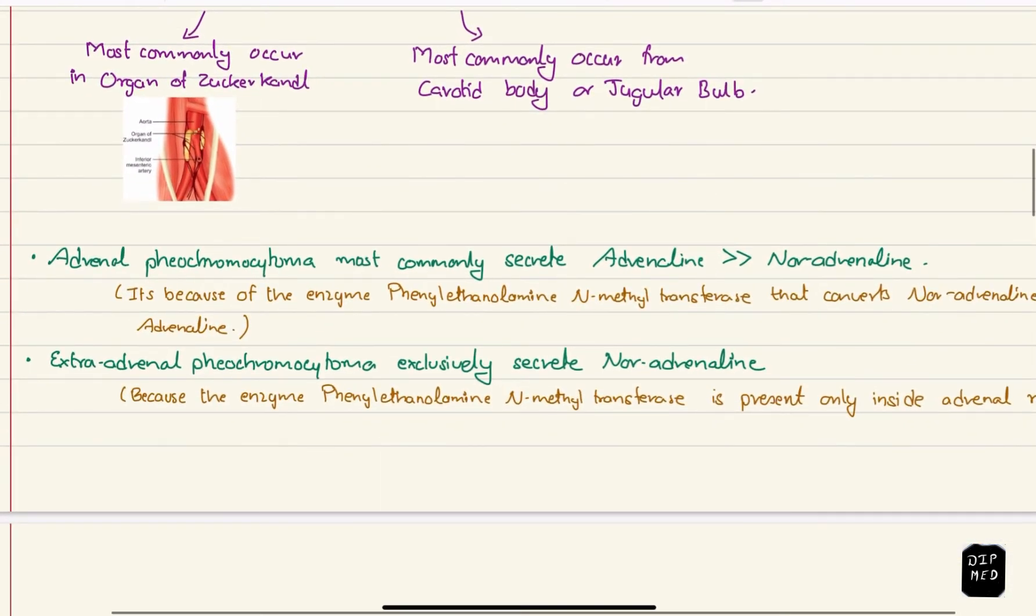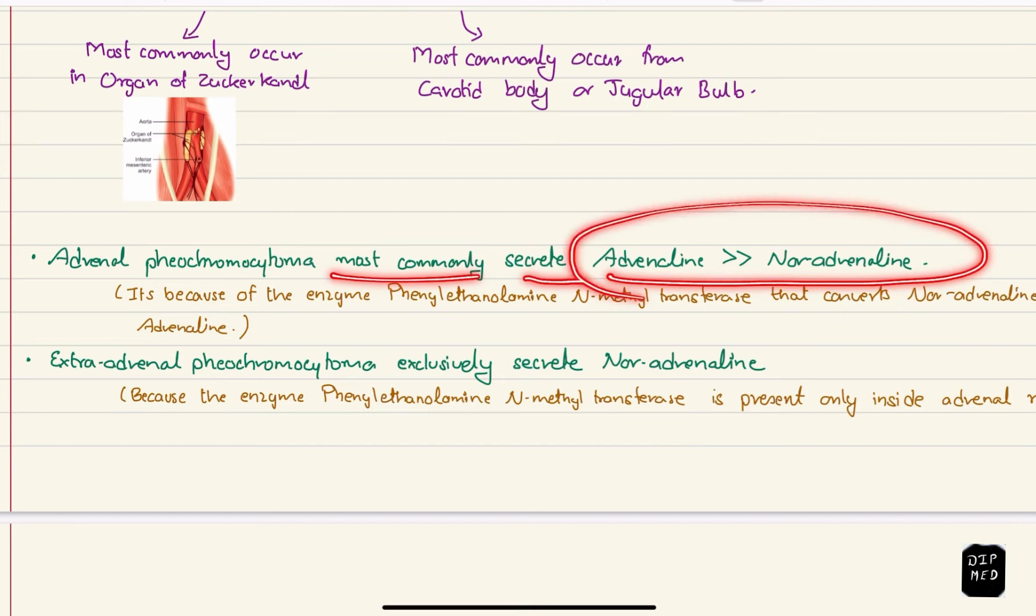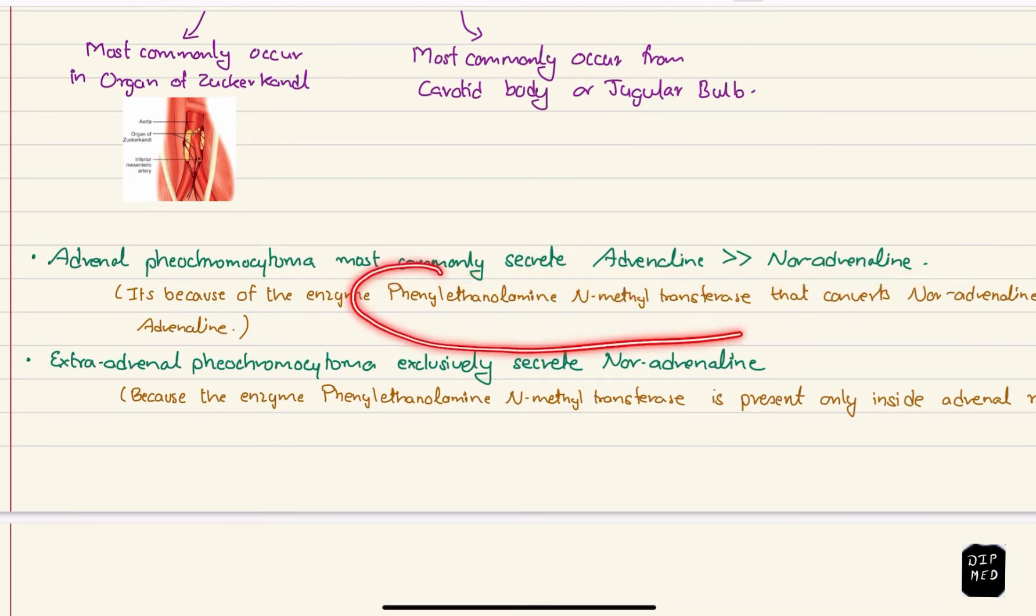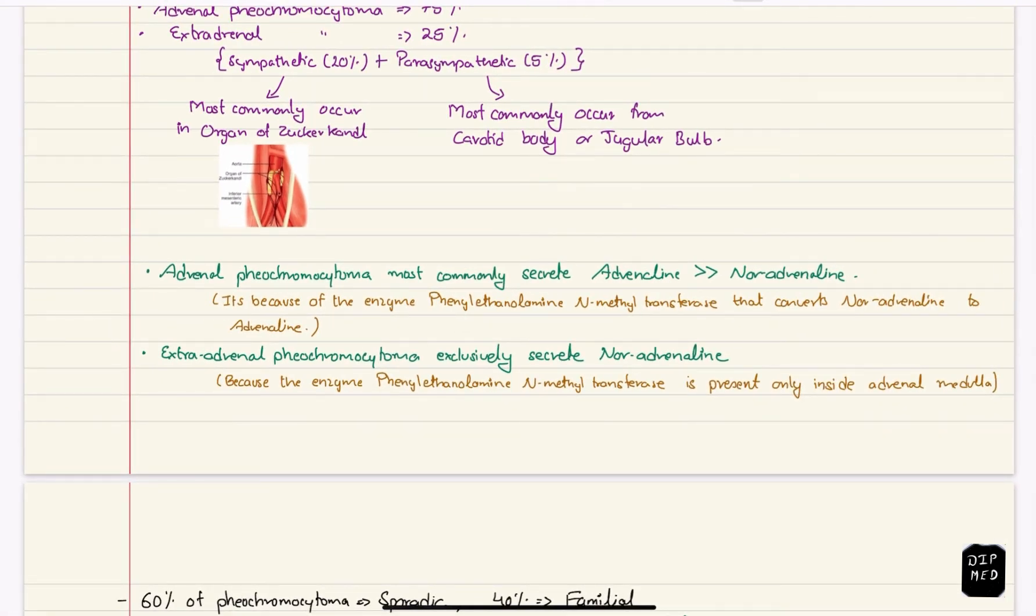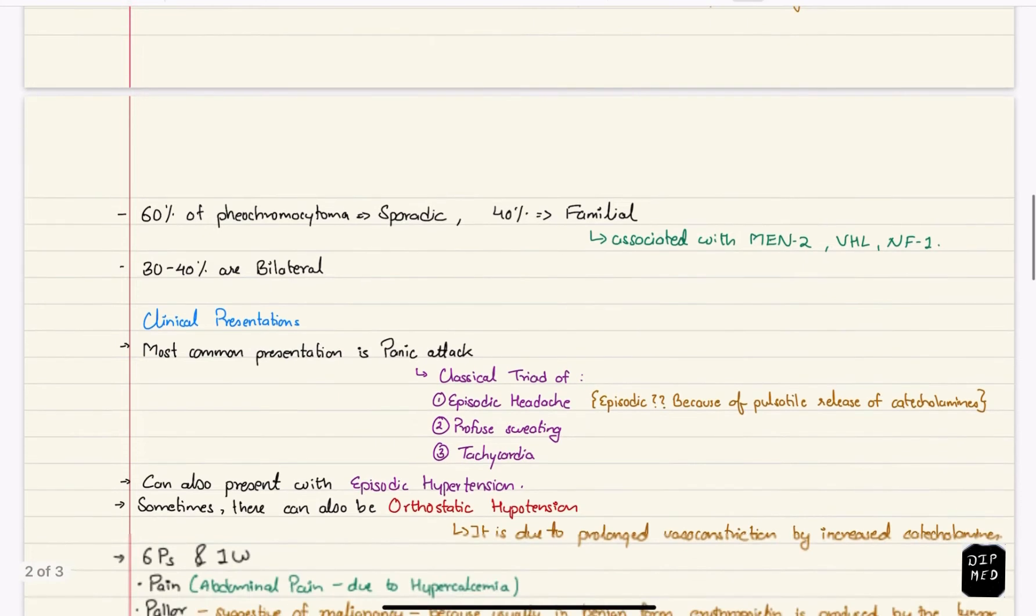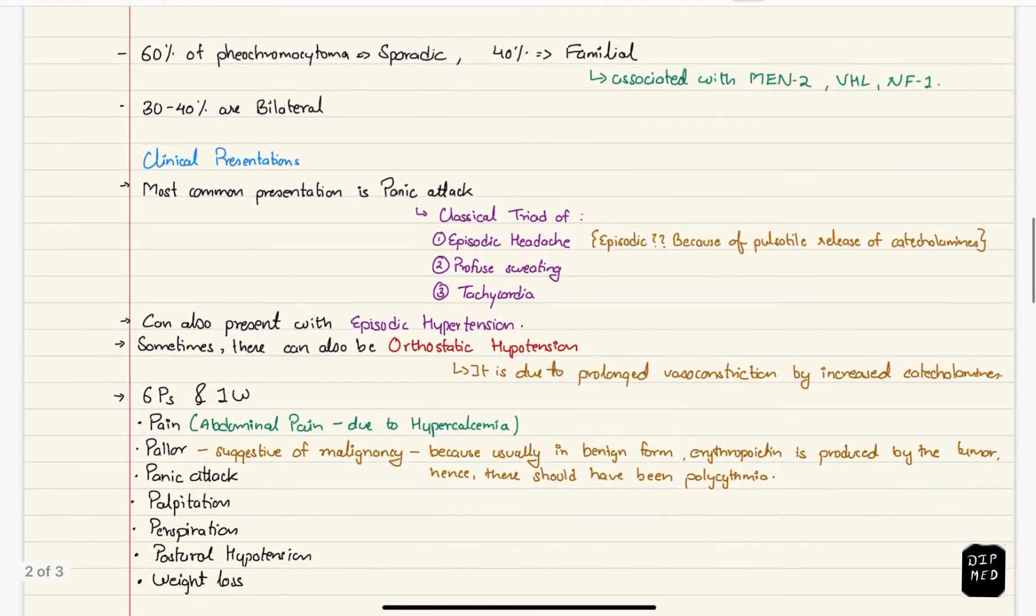Adrenal pheochromocytoma is more commonly secreting adrenaline than noradrenaline. It's because of enzyme phenylethanolamine N-methyltransferase that converts the secreted noradrenaline to adrenaline. But extraadrenal pheochromocytoma exclusively secrete noradrenaline because of lack of the same enzyme outside the adrenal gland. 60% of pheochromocytoma are sporadic and 40% are familial which are associated with syndromes like MEN2, von Hippel-Lindau disease and neurofibromatosis 1. 30-40% are bilateral. Usually it's the familial cases that present with bilateral pheochromocytoma.